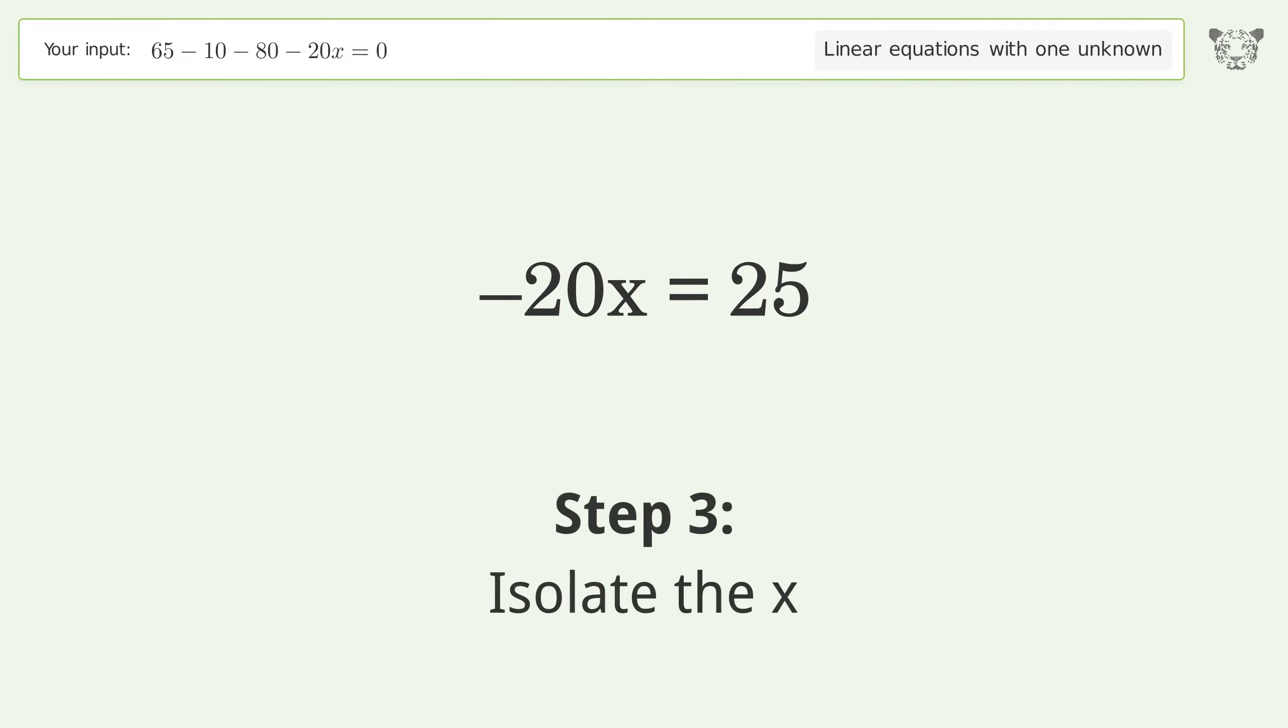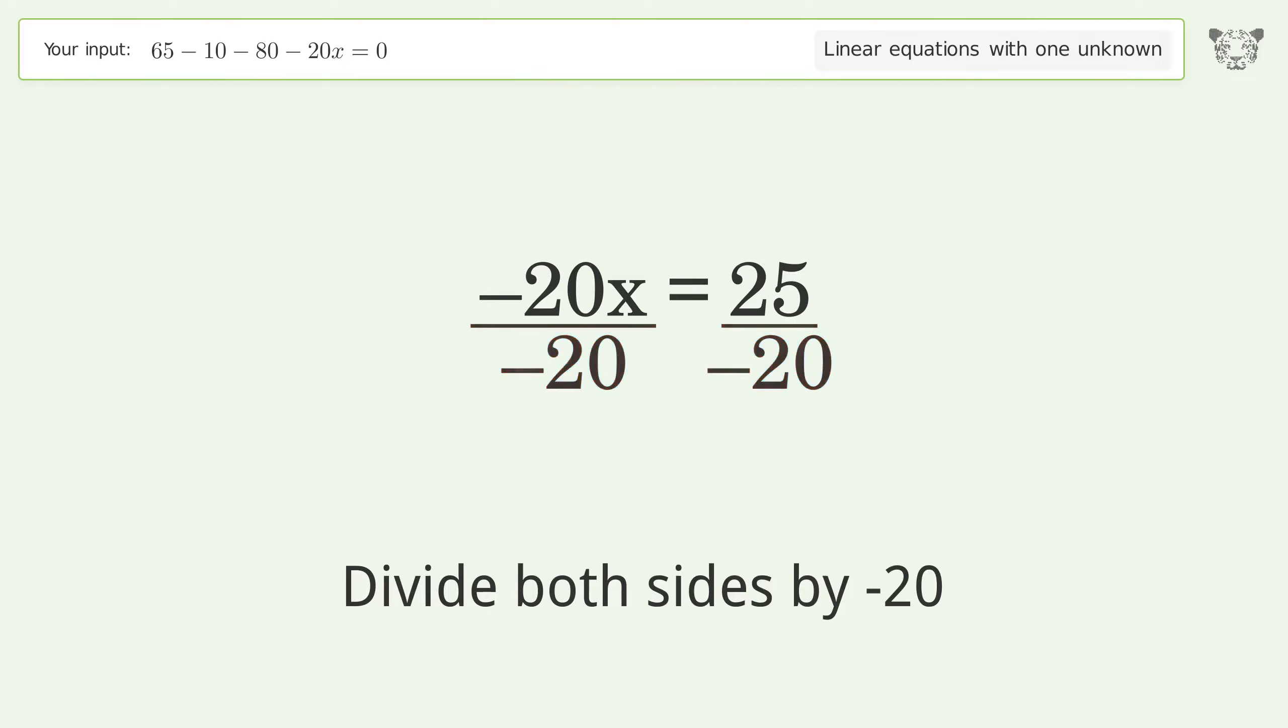Isolate the x. Divide both sides by negative 20. Cancel out the negatives.